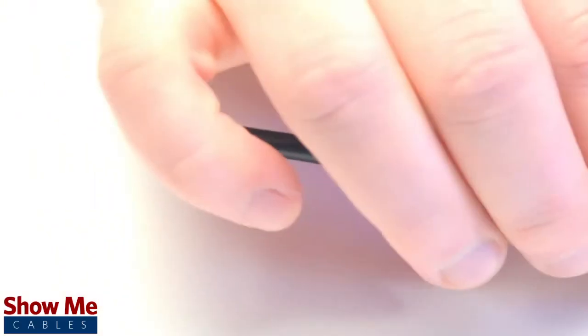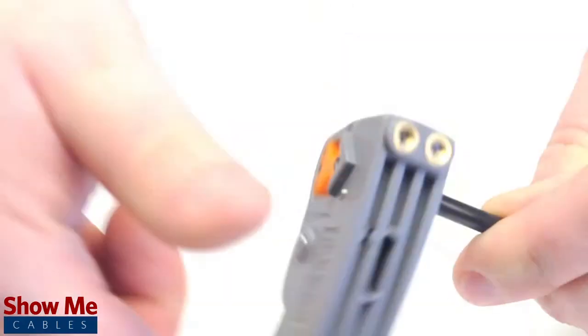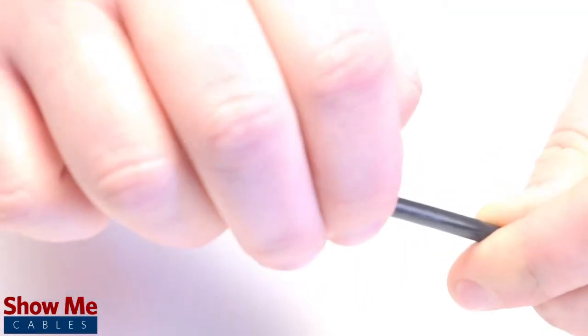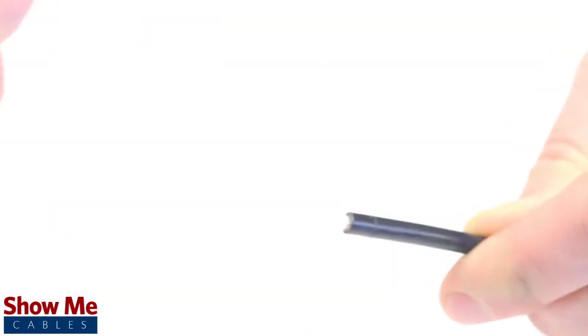Start by inserting the ferrule over the outer jacket of the cable. Then using your cable stripper, strip back the outer jacket and dielectric. The advantage of using a cable stripper is that it will strip back the jacket and dielectric at the same time.